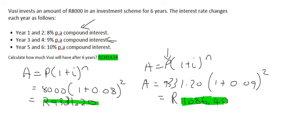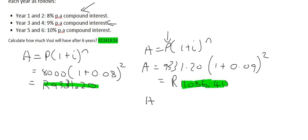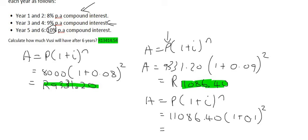So now that will become the new amount for year 5 and year 6. So we'll use the same formula where we're starting now with 11,086 Rand and 40 cents. And the interest rate is going to be 10%. So that's going to be 0.1, and that's going to be for two years. And if you do that, you'll realize that Vusi is going to have a total amount of 13,414 Rand and 54 cents at the end.